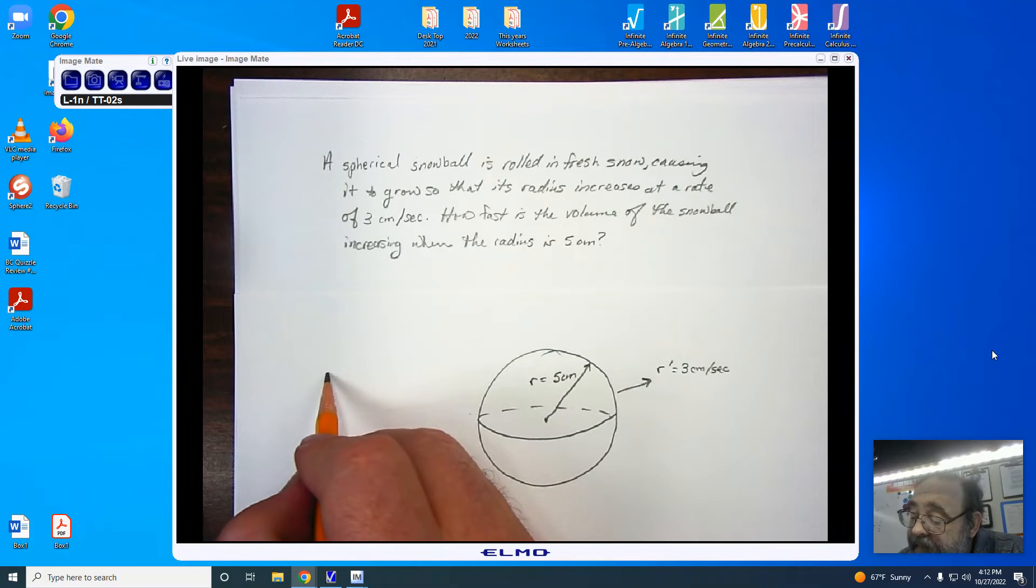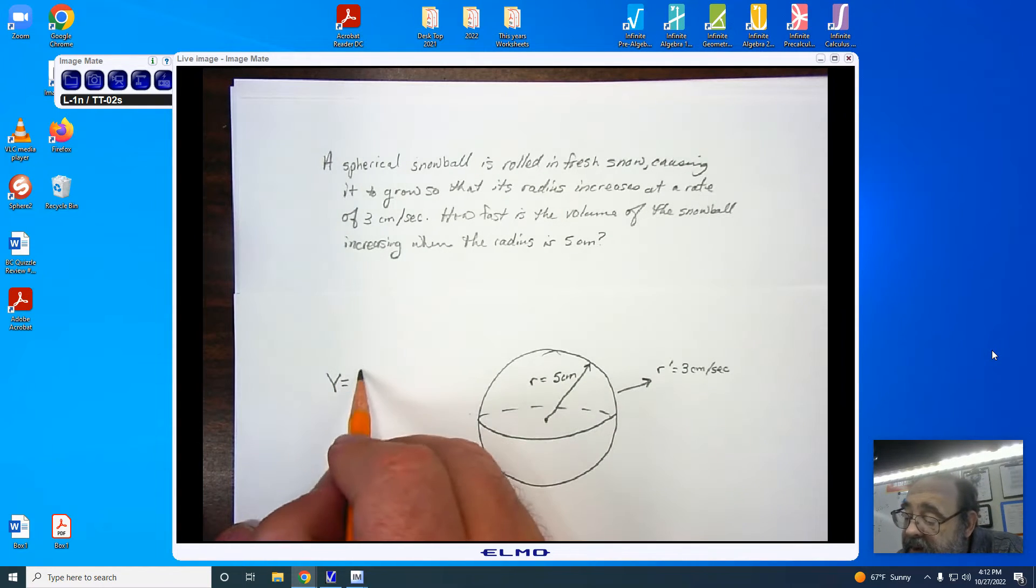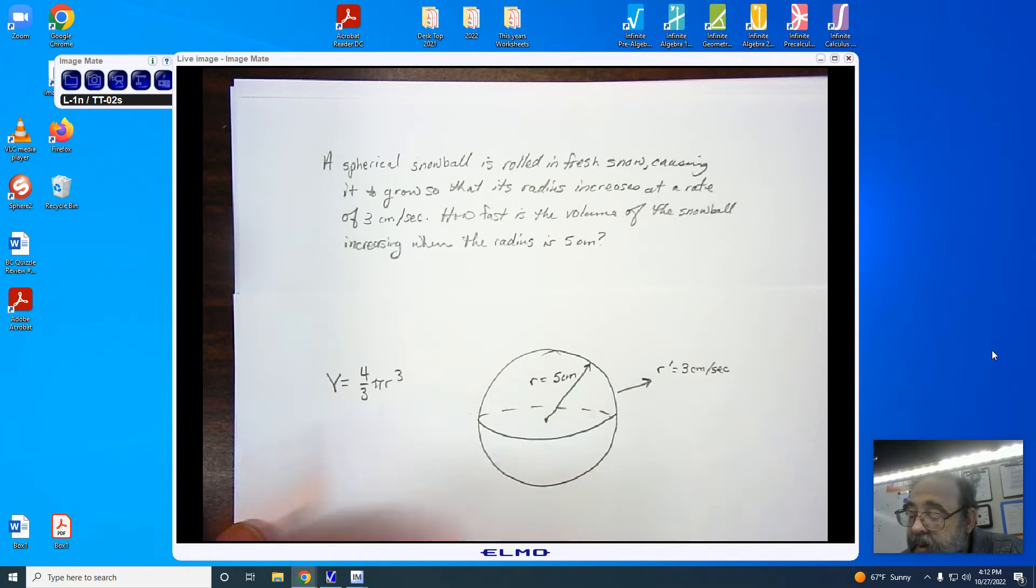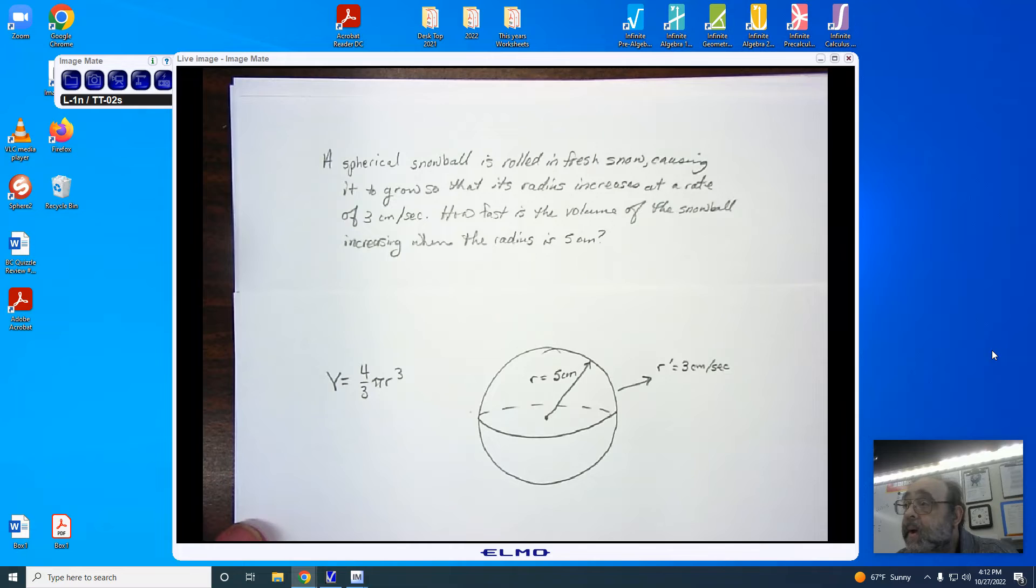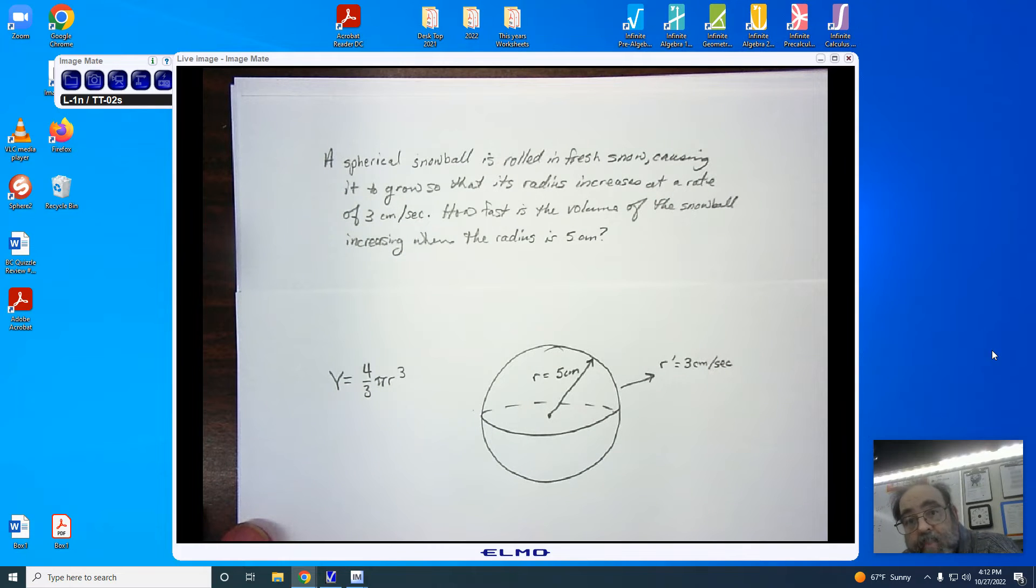We know the formula, and if you did not, I would be giving it to you on a test, 4 thirds pi r cubed. So this is what we're going to be working with. We're now going to take our implicit derivative.